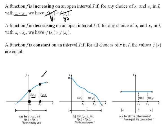Now, the next definition says a function is decreasing on an open interval I if for any choice of x1 and x2 in I with x1 less than x2, we have f of x1 greater than f of x2.